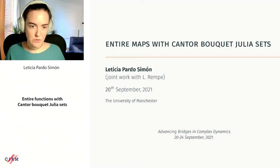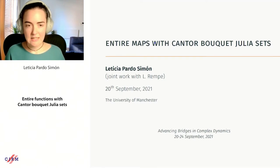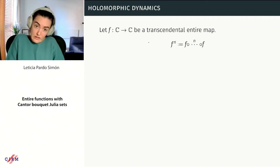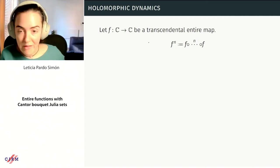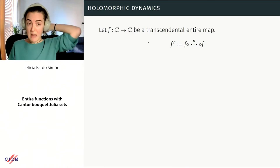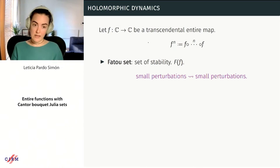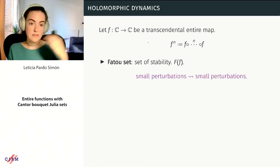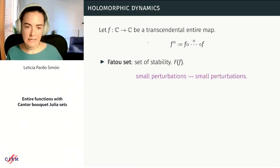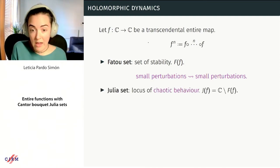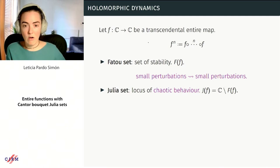Today I'm going to talk about joint work with Lasse Rempe. In this talk, F is only going to denote transcendental entire maps, and Fn is the nth iterate of this map. We want to understand the dynamics of such a map. We can look at the Fatou set — the locus of stability where small perturbations lead to small perturbations of orbits — and the Julia set, which is the locus of chaos, the complement in the plane of the Fatou set.